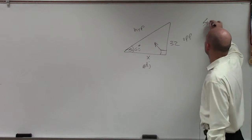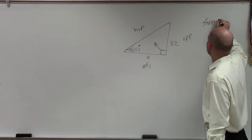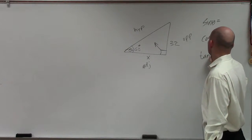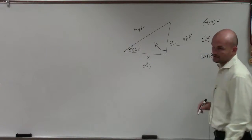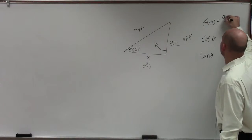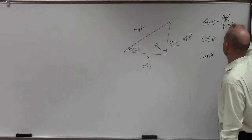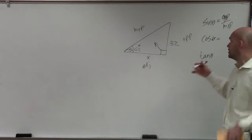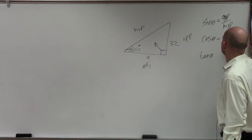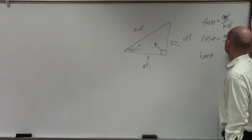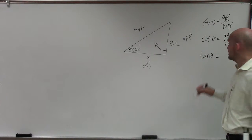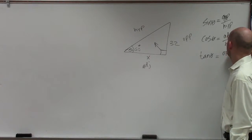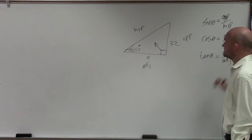So we need to go back and remember what the ratios of sine, cosine, and tangent are. Sine is opposite over hypotenuse. The cosine of an angle is the ratio of adjacent over hypotenuse. And tangent is the ratio of opposite over adjacent.